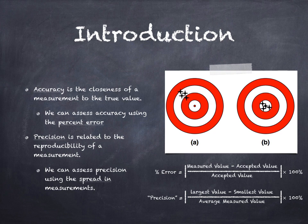In Table B, you're given criteria for assessing accuracy and precision. If your percent error and precision are below 1%, your measurements have good accuracy and precision.